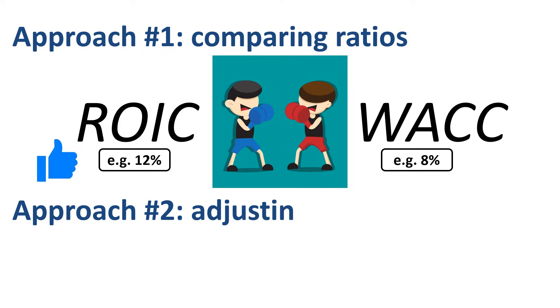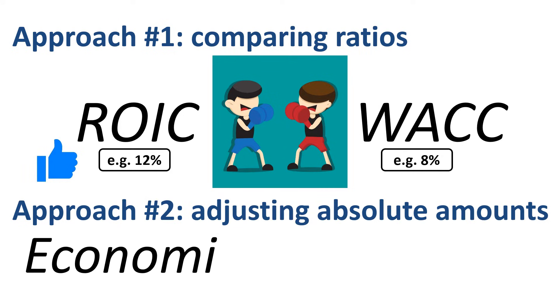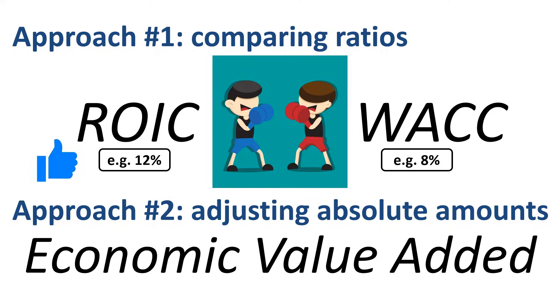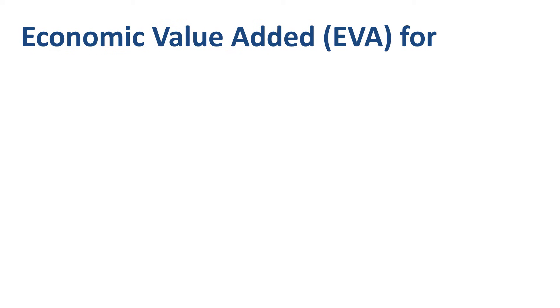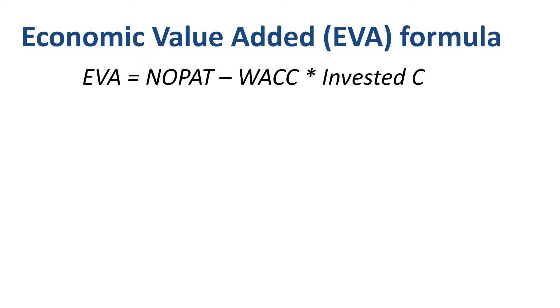The second approach is to adjust absolute numbers. This is where Economic Value Added comes in. Here's the Economic Value Added formula — this might look a bit cryptic at first, but we will go through each of the elements of the EVA formula and illustrate Economic Value Added with a numerical example. EVA equals NOPAT minus WACC times the invested capital.